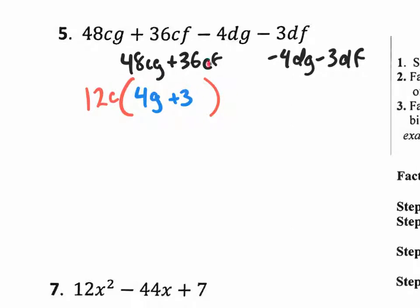C times what gives a C. It's like a one. You don't need to put it, but you do need an F because you need an F up there. So 3F is your second term.